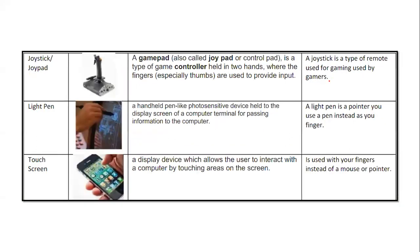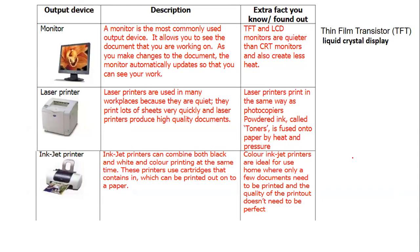Joystick or joy pad: also called a game pad or control pad, it is a type of game controller held in the hands where the fingers provide the input — essentially a remote used for gaming by gamers. Light pen: a handheld, pen-like photo-sensitive device used with the display screen of a computer terminal for passing information to the computer — used as a pointer like a pen. Touch screen: a device which allows you to interact with the computer by touching the screen using fingers instead of a mouse or pointer.